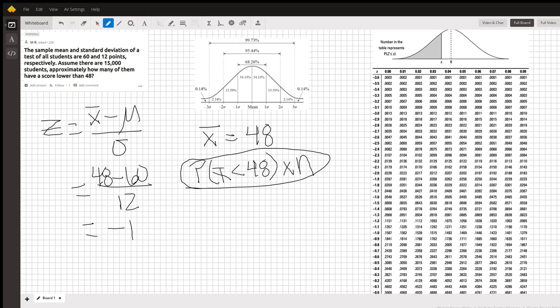So we know our z-score is negative 1. We can simply look this up in a z-table, which I've included on the right side of my screen here.